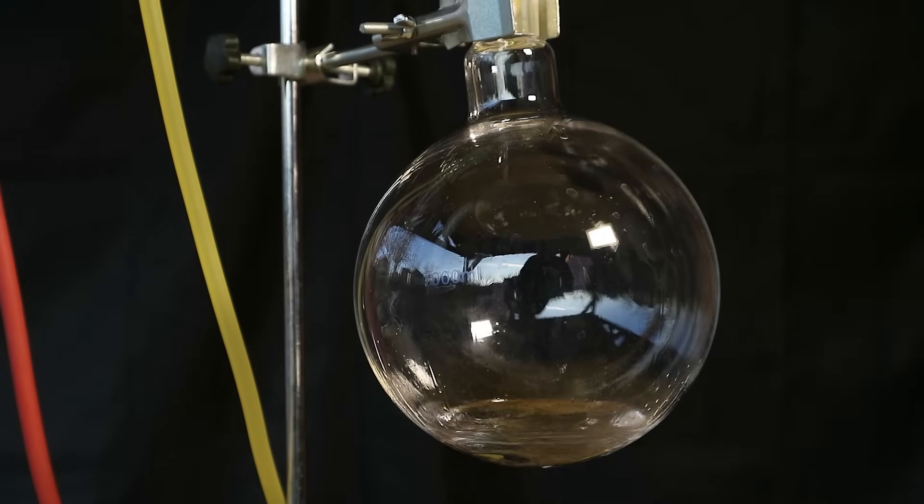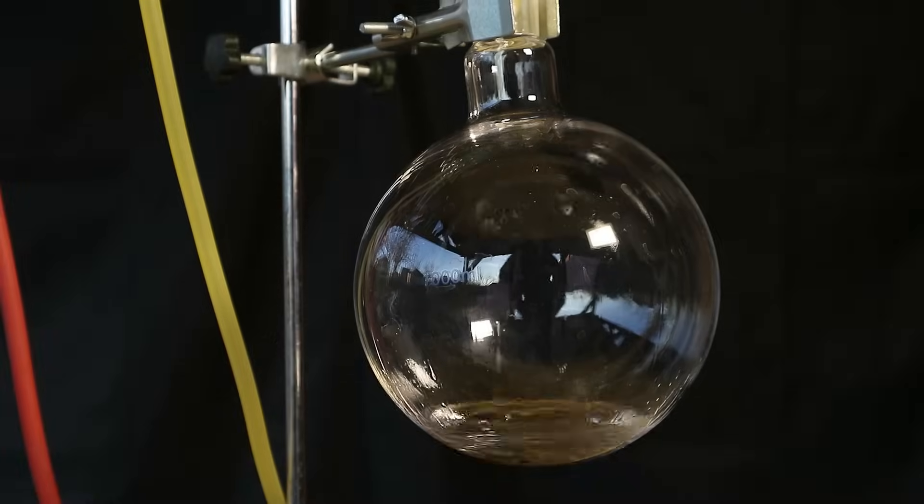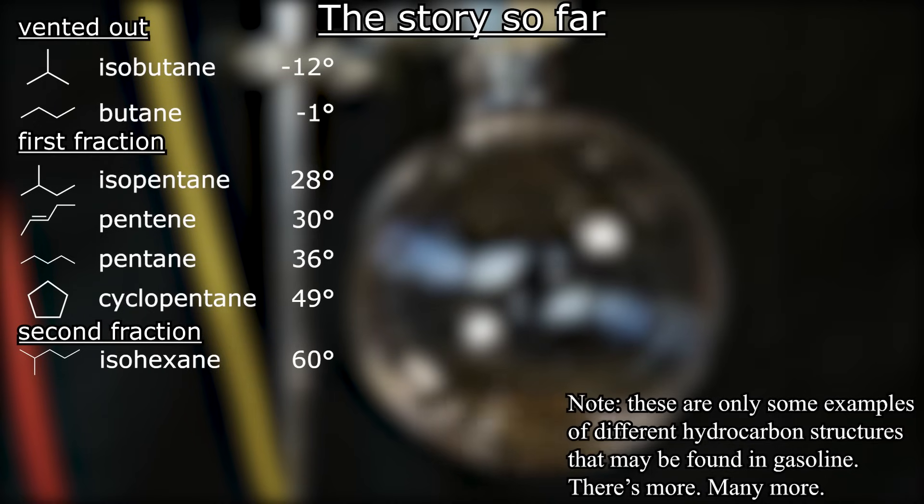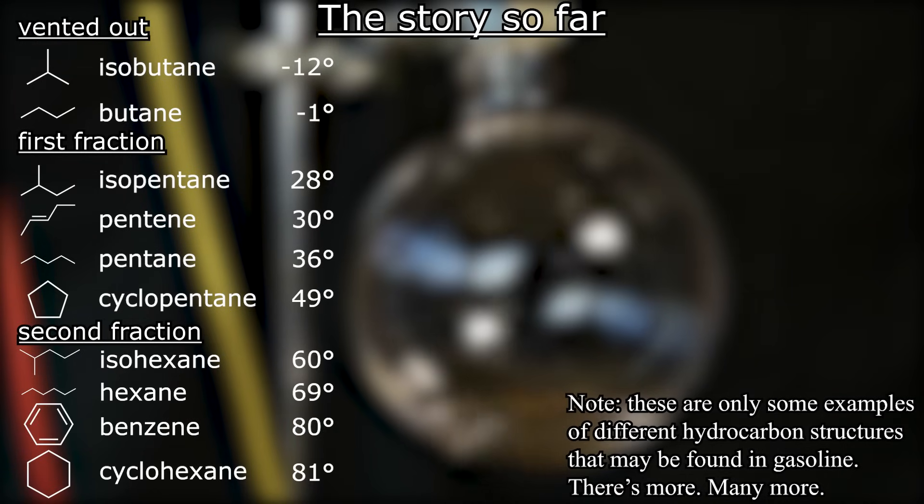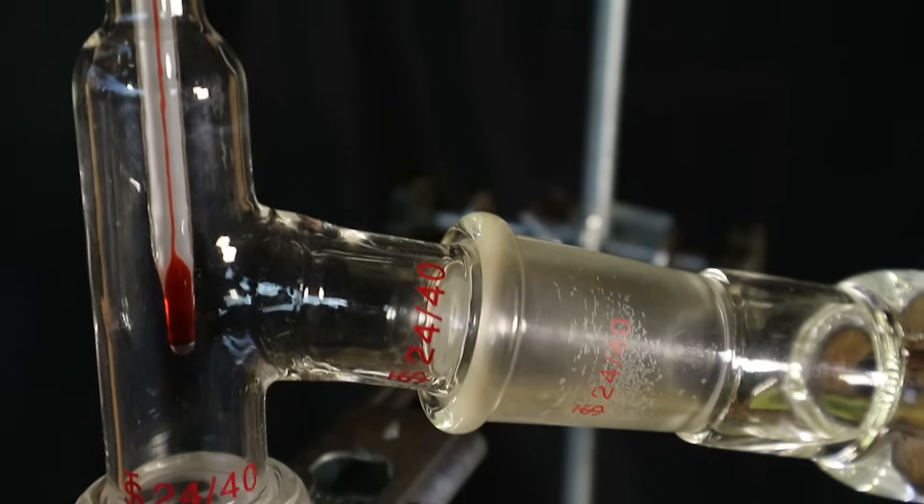The next fraction we'll start collected at around 60 degrees up until 86 degrees and these are mostly the hexanes. We will stop at 86 degrees which means that cyclo hexane will catch a lot of it. We will have also in our fraction everyone's favorite resonant cancerogenic ring of benzene, it is in very small quantities but it's obviously still all very toxic stuff.